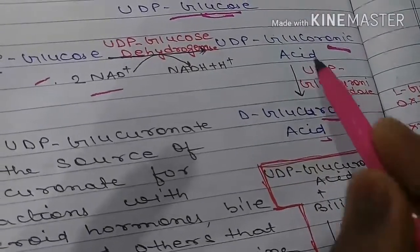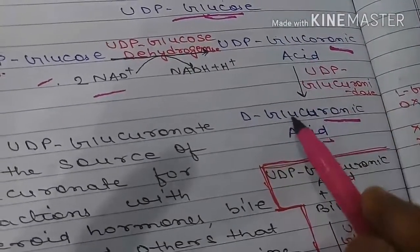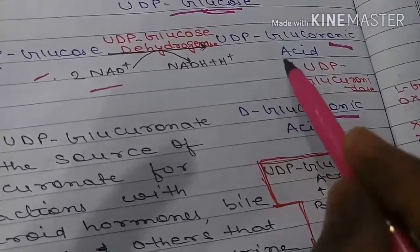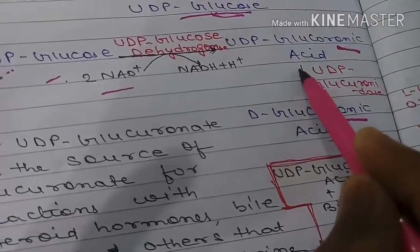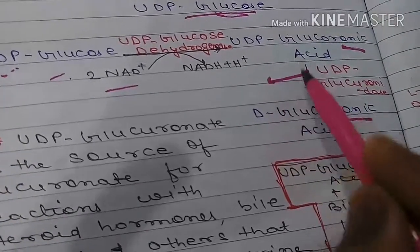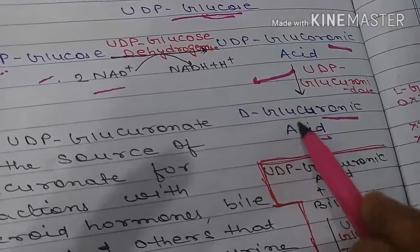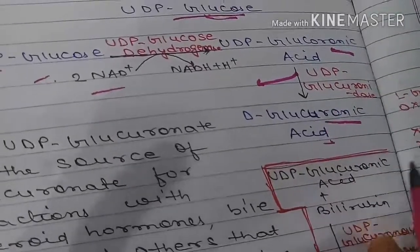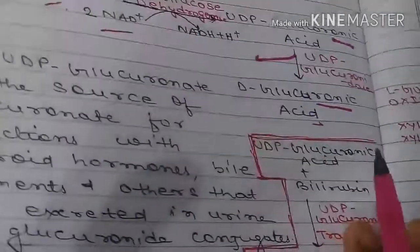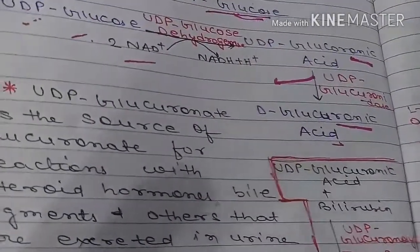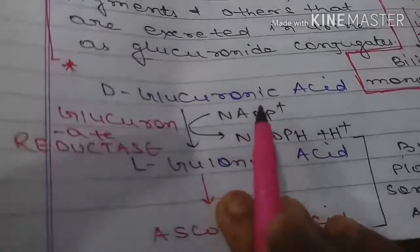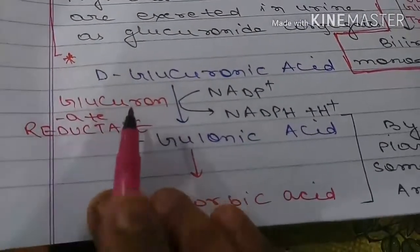UDP-glucuronic acid has UDP removed to give D-glucuronic acid. This conversion simply involves removal of the UDP group to yield D-glucuronic acid.